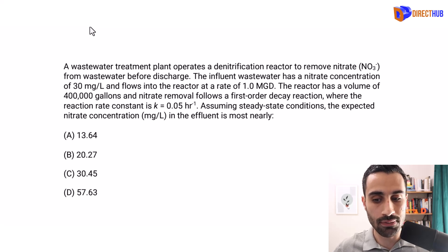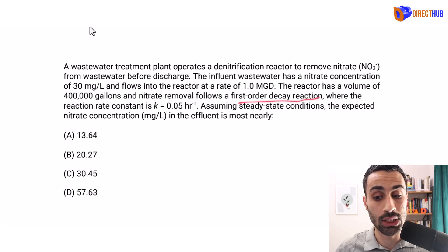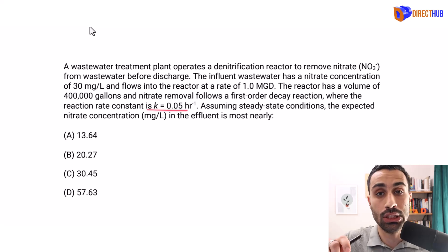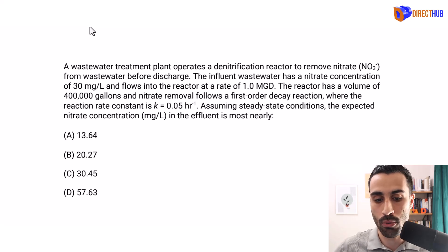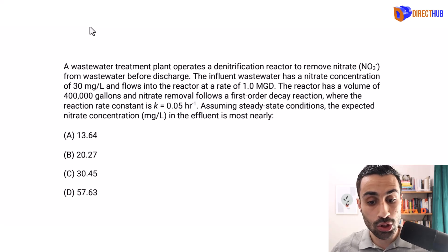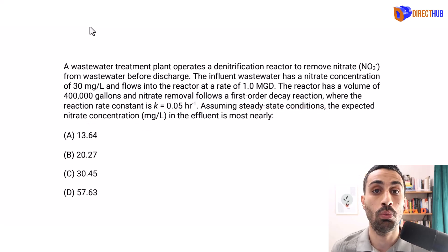The reactor has a volume of 400,000 gallons and nitrate removal follows a first-order decay reaction where the reaction rate constant K is 0.05 per hour. Assume steady state conditions. The expected nitrate concentration in milligrams per liter in the effluent is most nearly what?